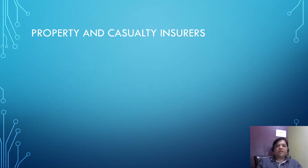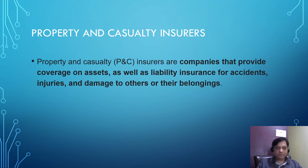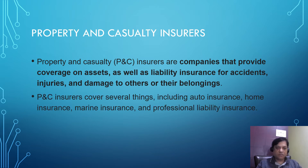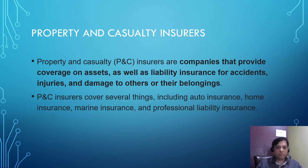The property and casualty insurers are companies that provide coverage on assets as well as liability insurance for accidents, injuries, and damage to others or their belongings. P&C insurers cover several things like auto insurance, home insurance, marine insurance, and professional liability insurance.